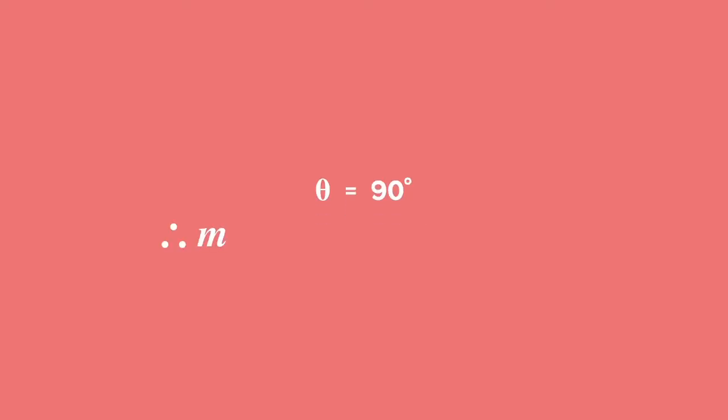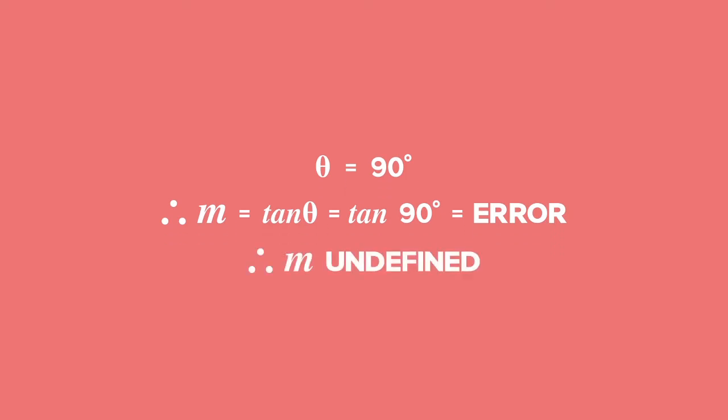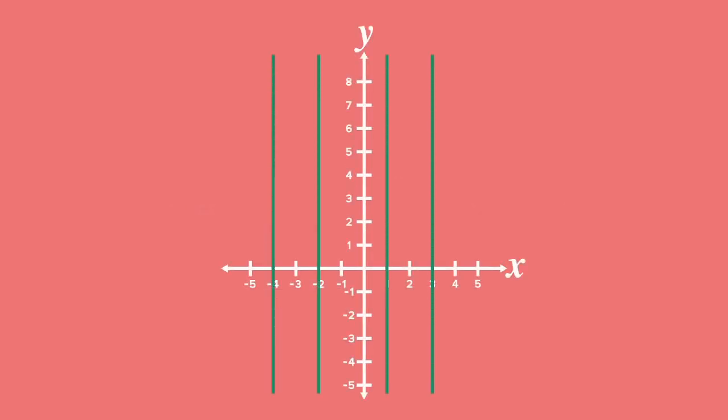For part (b), we need to calculate the gradient of a line with an inclination of 90 degrees. Let theta equal 90 degrees, therefore m equals tan theta, which equals tan 90 degrees. Using your calculator, the screen will display an error, which means the tangent of 90 degrees is undefined. This happens because we are dealing with a vertical line, and the gradient of any vertical line will always be undefined.